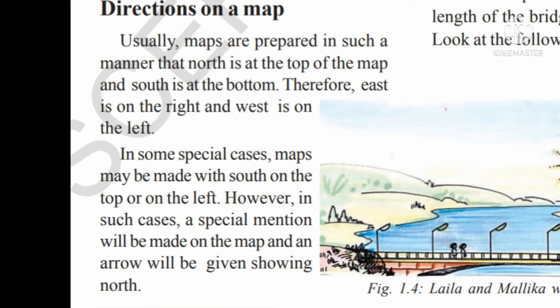North is at the top of the map and the opposite side of north is south, so south is at the bottom. East is on the right side and the opposite side of east is west, on the left side. In some special cases, maps may be made with south on the top or on the left.